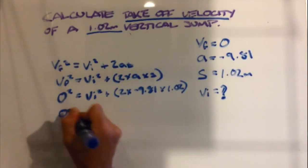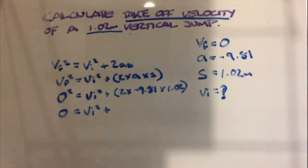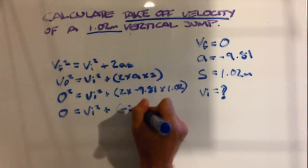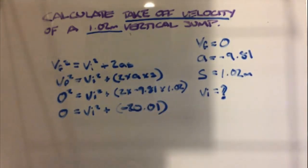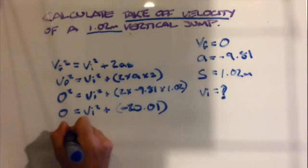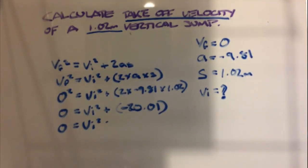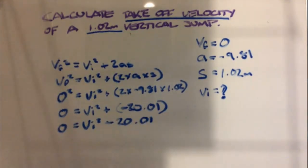0 squared is 0. Still haven't found our initial velocity. We calculate our formula here, and that works out to be negative 20.01. When we times a negative and a positive, we always land up with a negative.